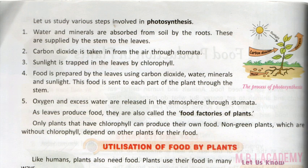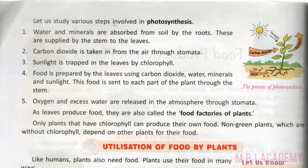Oxygen and excess water are released into the atmosphere through stomata. There are two waste products of the photosynthesis reaction: oxygen and water — both are released into the atmosphere. As leaves produce food, they are also called the food factories of plants.